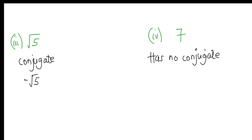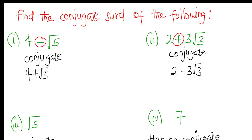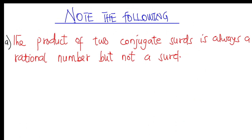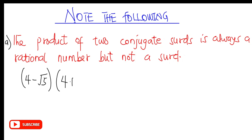Now let's note two things under conjugate surds that will help us understand them very well. The first note is: the product of two conjugate surds is always a rational number, but not a surd. For example, take 4 − √5; its conjugate is 4 + √5, and we are going to look at their product.